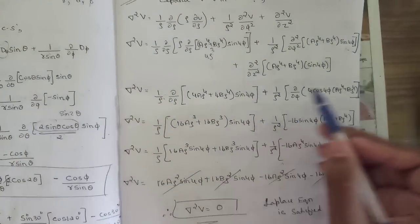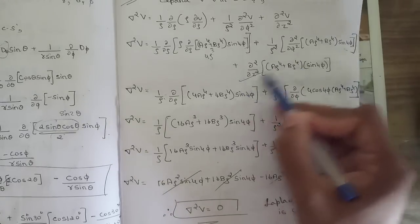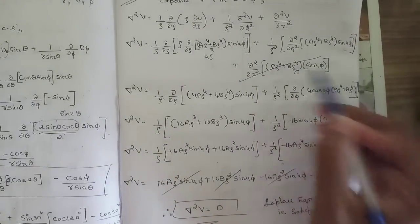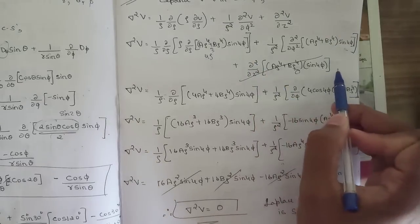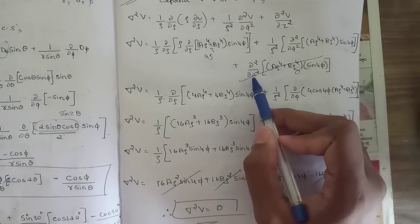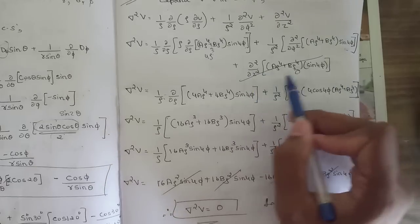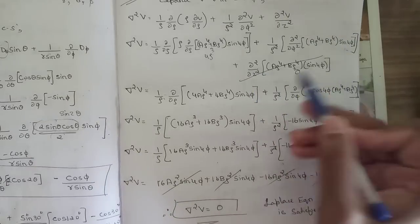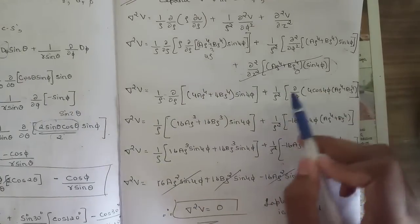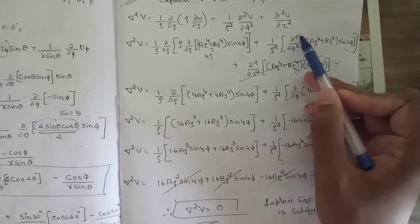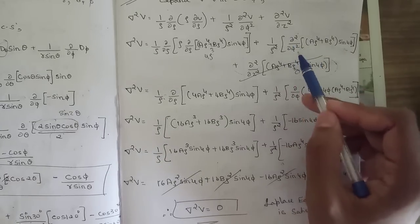The ∂²V/∂z² term is directly zero because there is no z term in V. For the (1/ρ²)(∂²V/∂φ²) term, we need to differentiate twice with respect to φ.